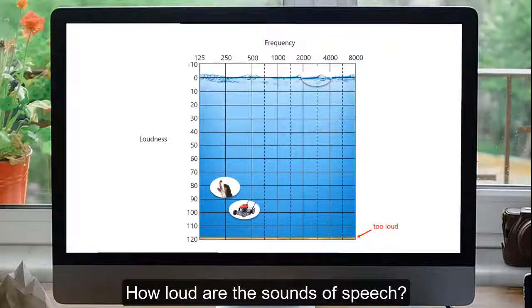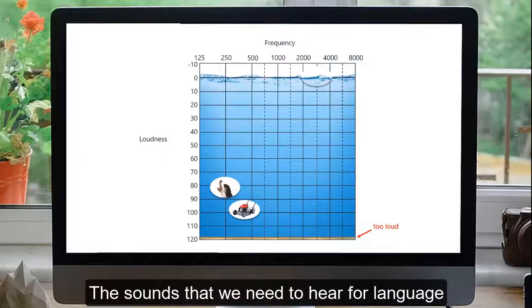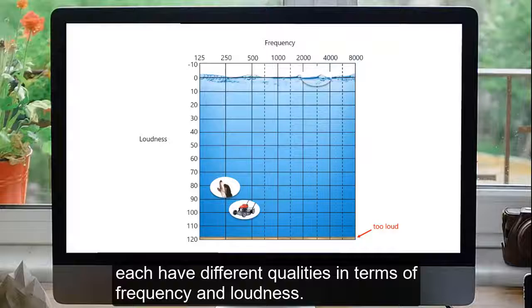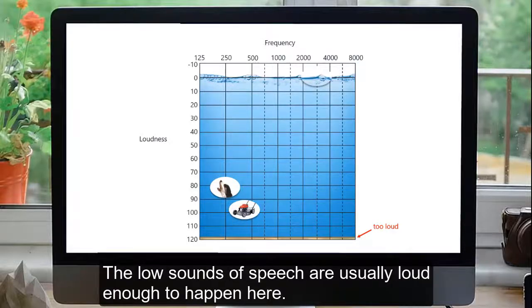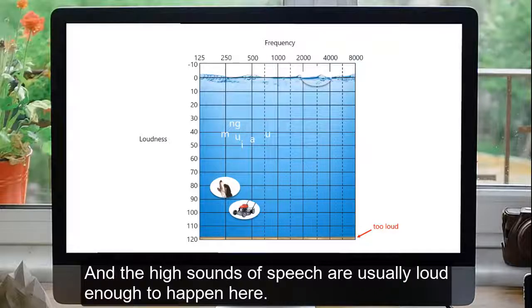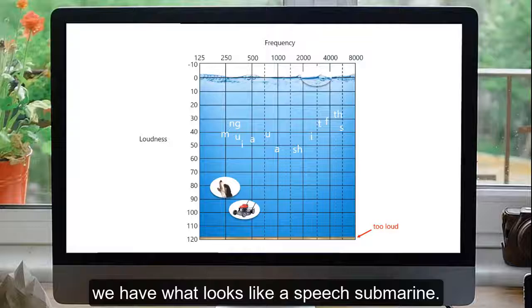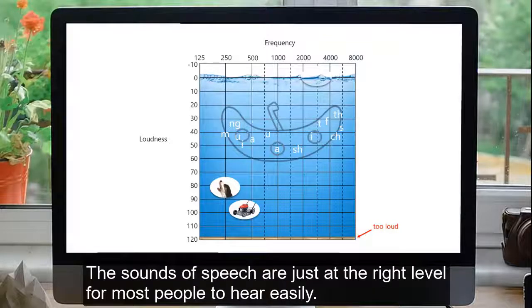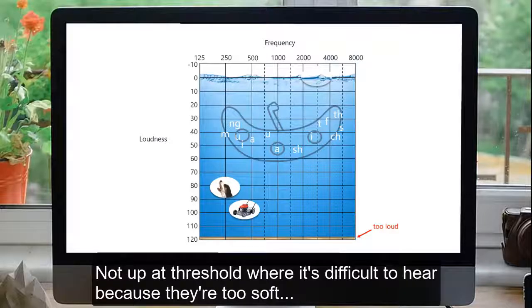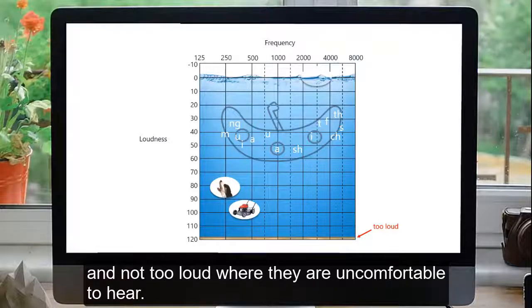How loud are the sounds of speech? The sounds that we need to hear for language each have different qualities, in terms of frequency and loudness. The low sounds of speech are usually loud enough to happen here. And the high sounds of speech are usually loud enough to happen here. If we draw a shape around all of the sounds of speech, we have what looks like a speech submarine. The sounds of speech are just at the right level for most people to hear easily, not up at threshold where it's difficult to hear because they are too soft, and not too loud where they are uncomfortable to hear. They're just right.